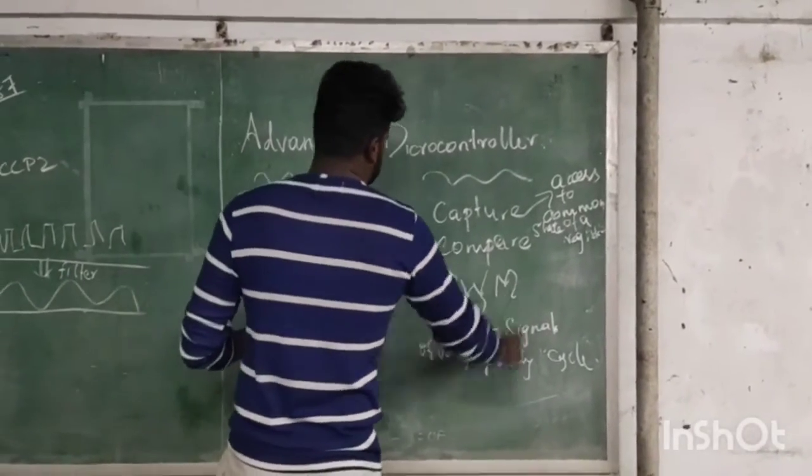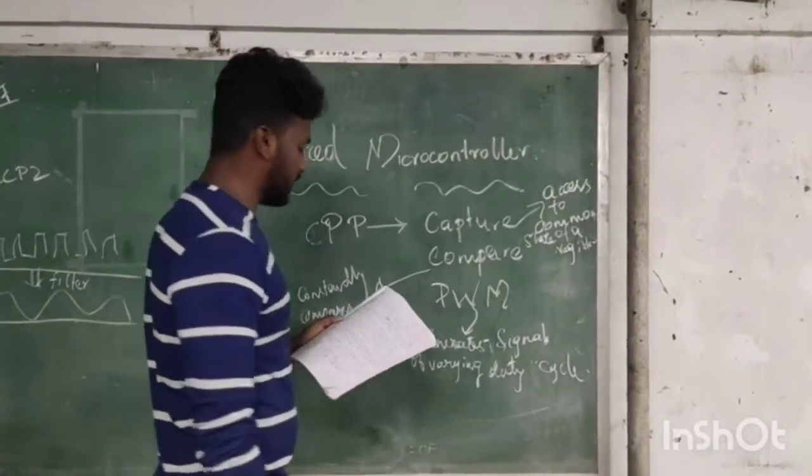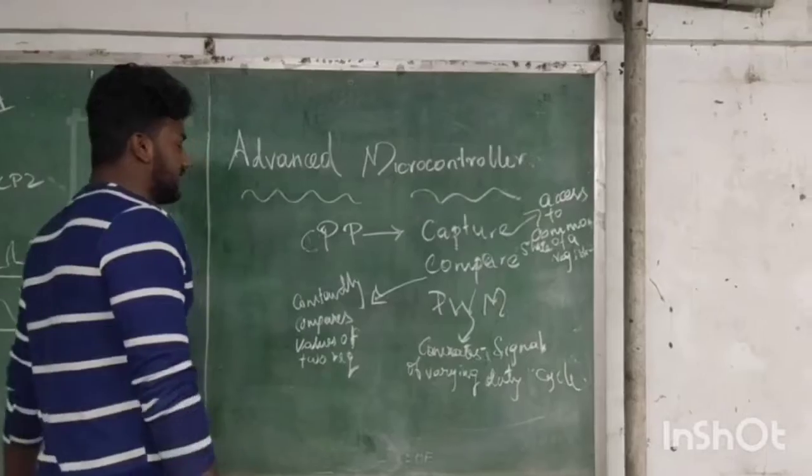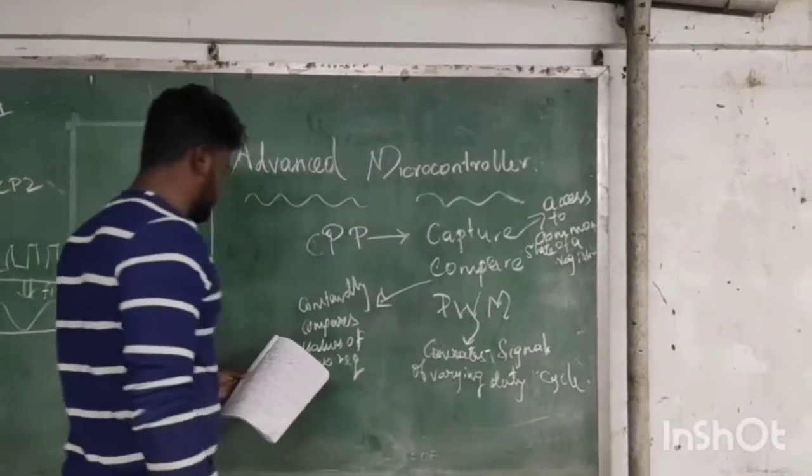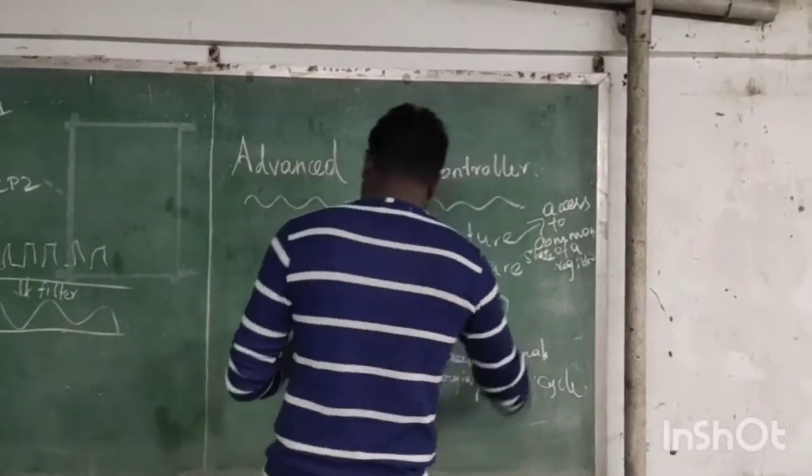PWM refers to pulse width modulation. We already studied in our communication system. It can generate signals of varying duty cycles, frequency, and cycle on output pins.